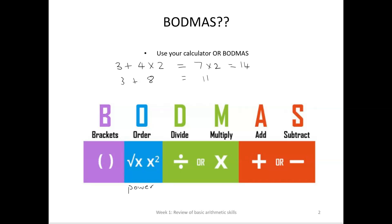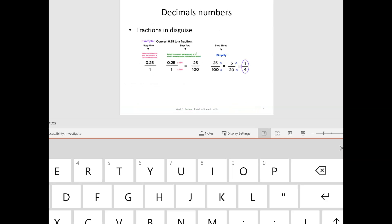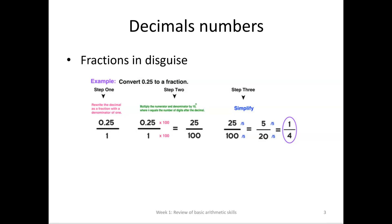Just remember BODMAS. It's important with numbers, and it's important with letters later on when we get into algebra. Now, we looked at fractions in Class 2. Now we're just going to look at fractions again, but with decimals in mind. This is a very simple example to convert 0.25 — you probably know that it's a quarter, but it does go through the logic.